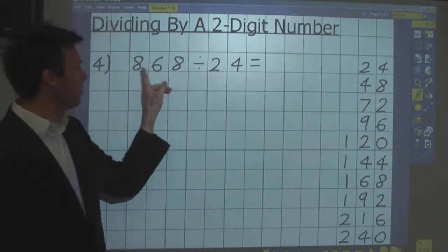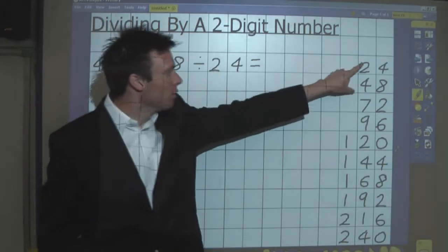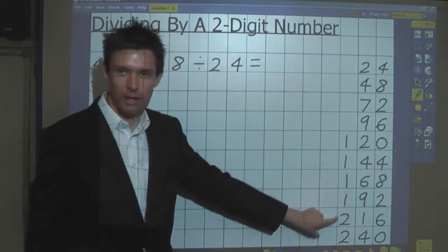We start by doing 868 divided by 24, with 24 times the table down the side of the page to refer to.